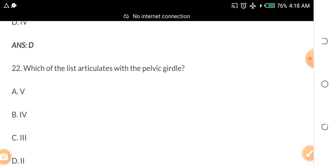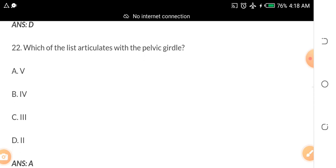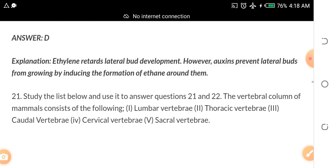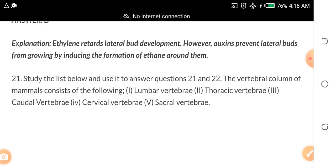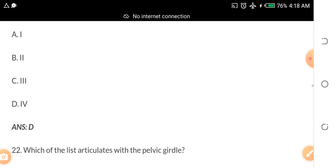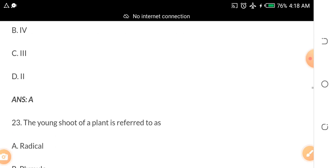Which of the lists articulates with the pelvic girdle? The pelvic girdle is downwards. A. V, B. IV, C. II, D. III. The answer is V. And what is V? V is sacral vertebrae. This thing has to do with the spinal cord. I hope you are following.